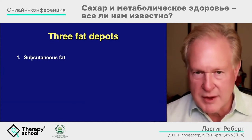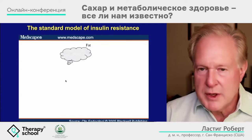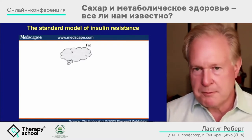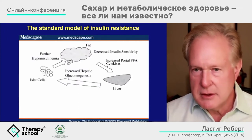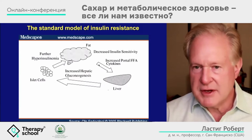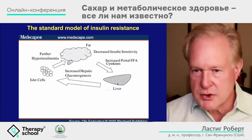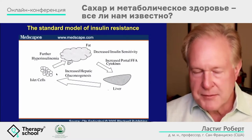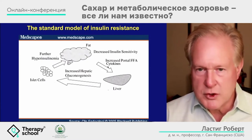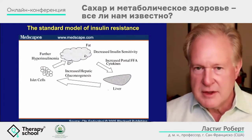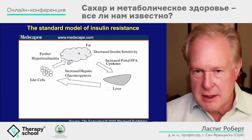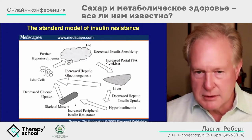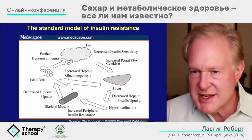The first fat depot is subcutaneous fat — the one you can see. In medical school, we learn that you get fat, you secrete IL-6, TNF-alpha, and various cytokines into the portal circulation. The liver becomes dysfunctional, increasing hepatic glucose output, raising blood glucose, and the beta cell releases more insulin — a vicious cycle of obesity and hyperinsulinemia. But this model starts with the fat, and it is not correct.